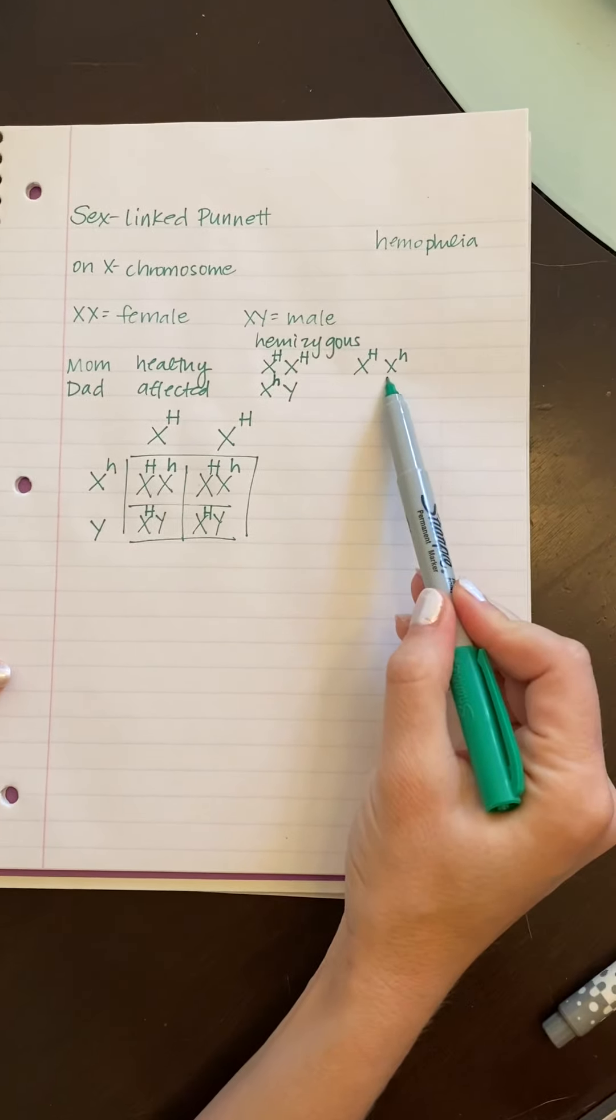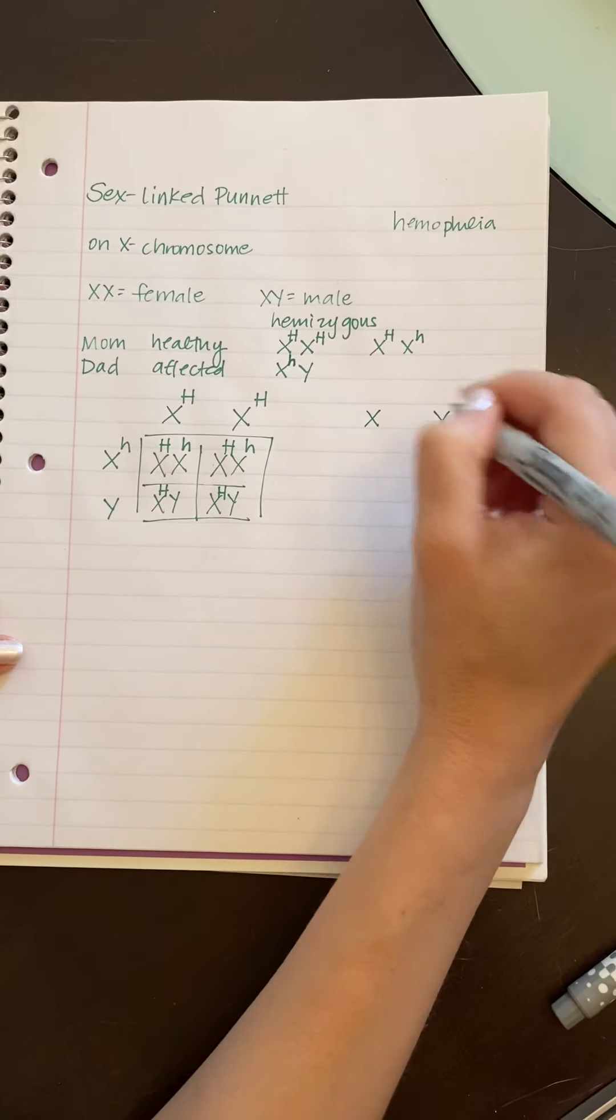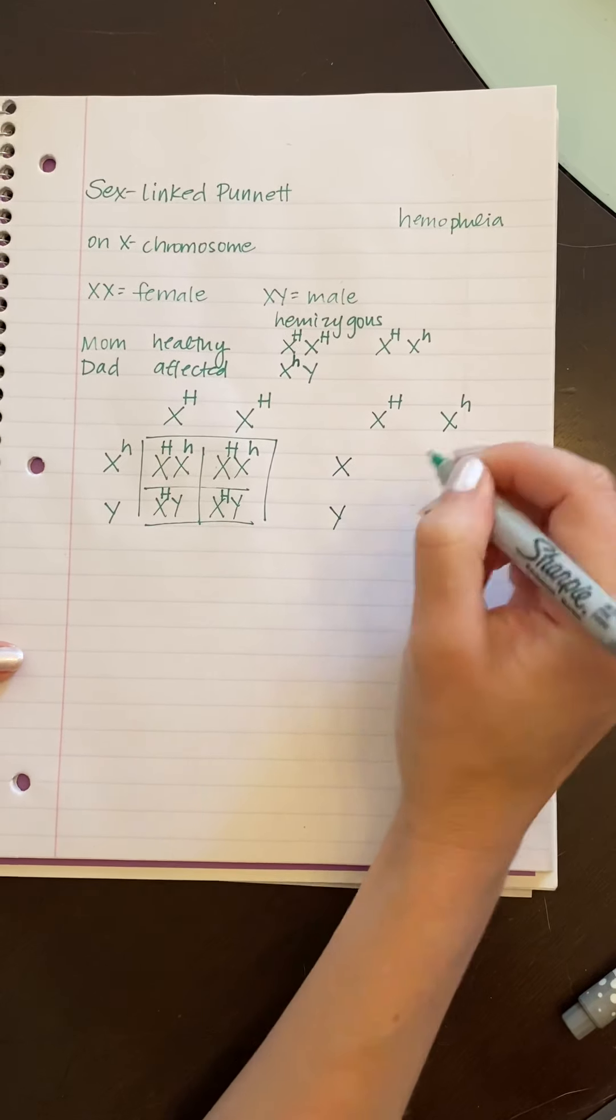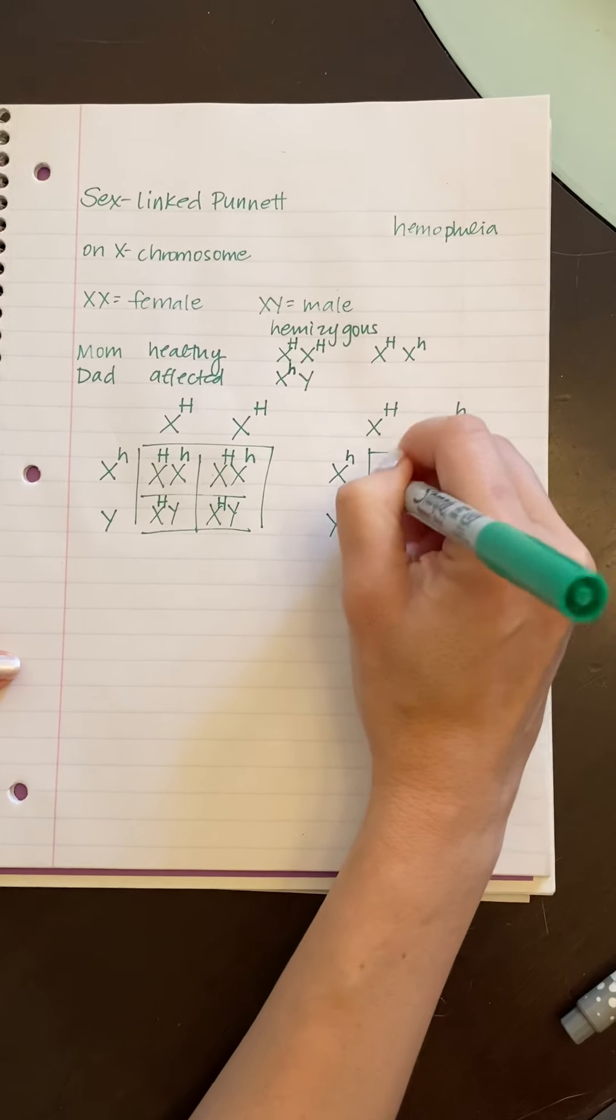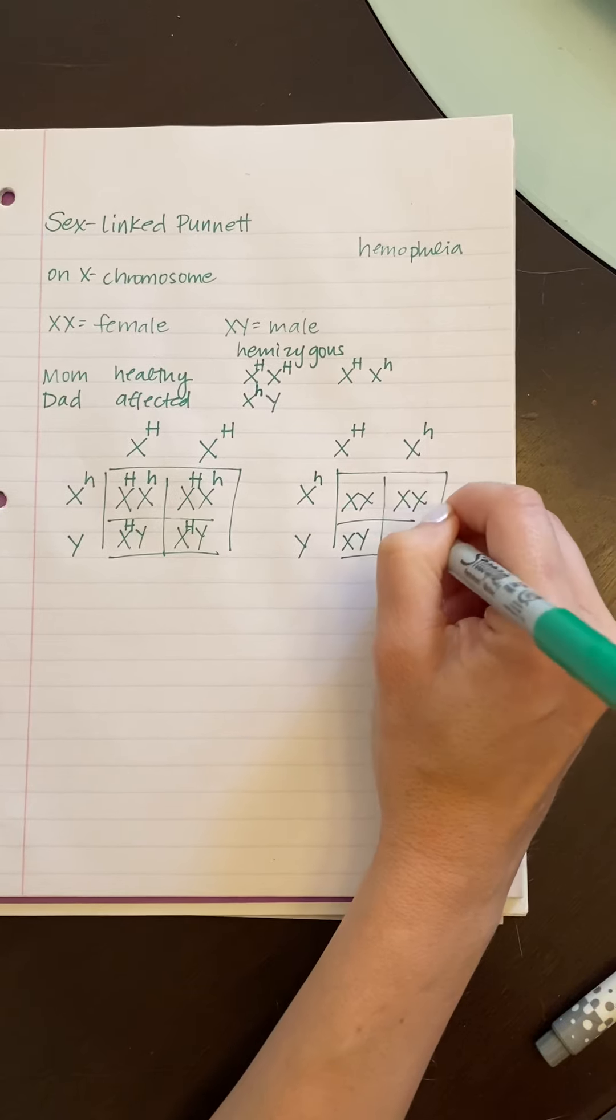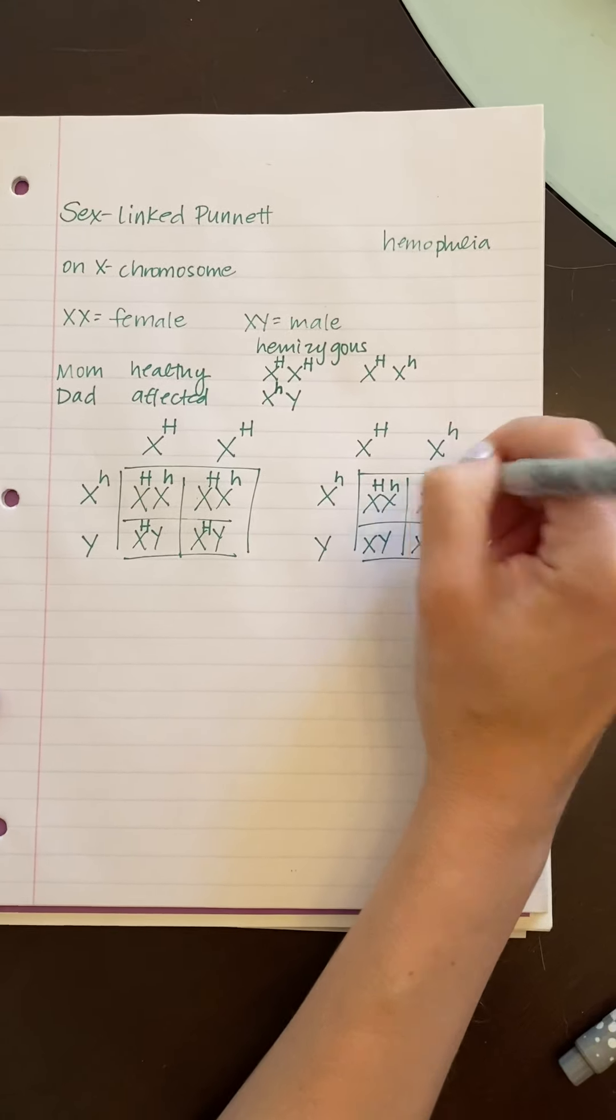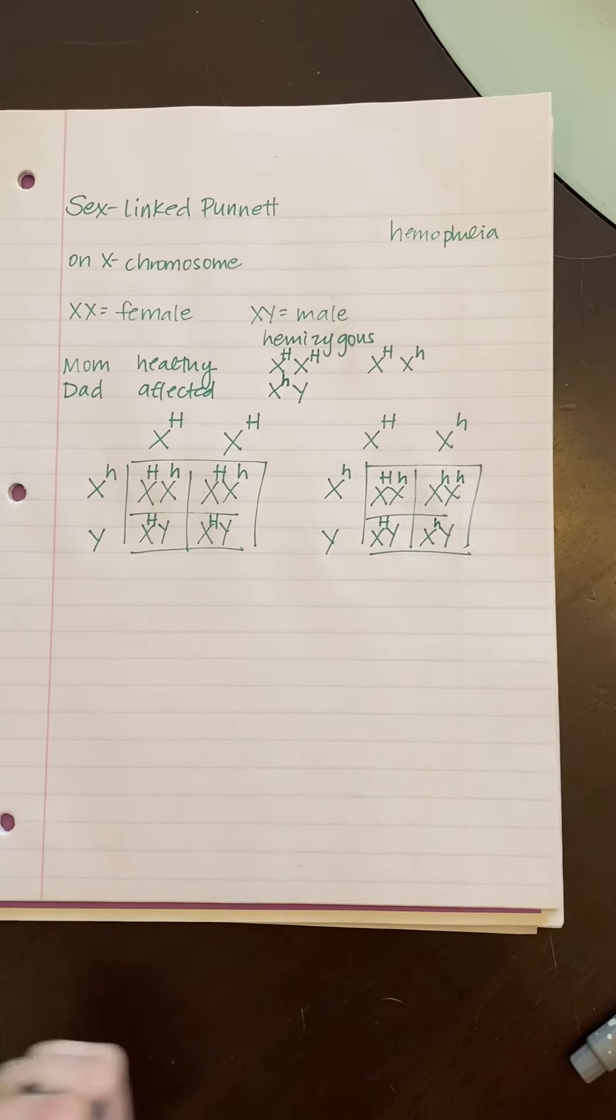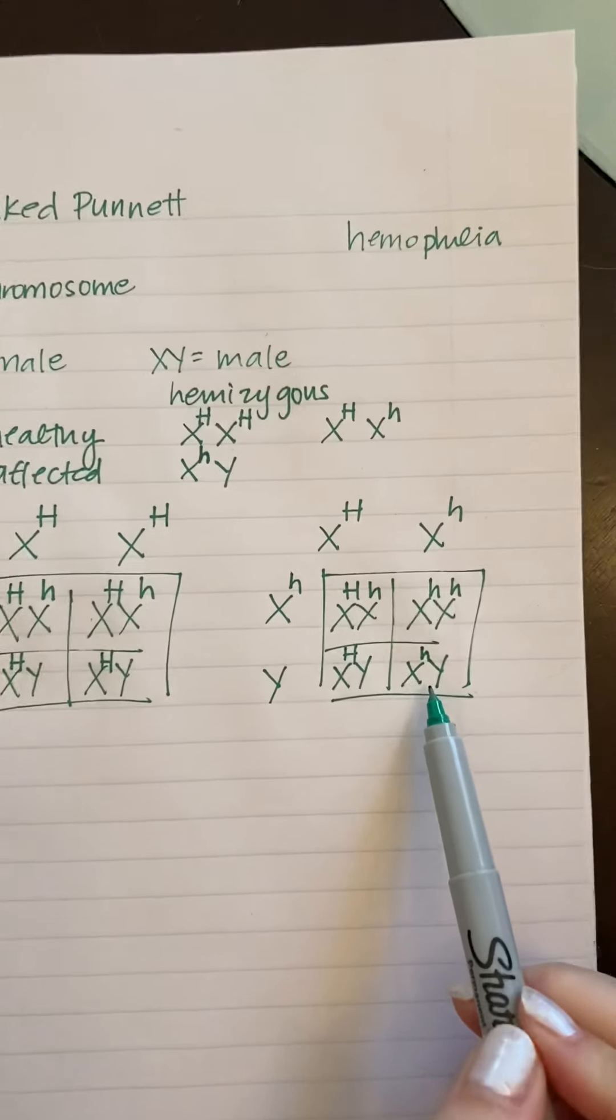But let's see if mom is actually this, because we can't tell just from looking at her. She might carry that affected X and not know about it. Again, we could make daughters or we could make sons. We're going to sort all of the alleles now. And what we see is there are boxes that are completely recessive.